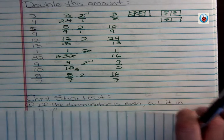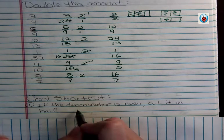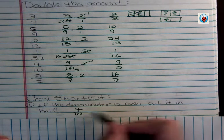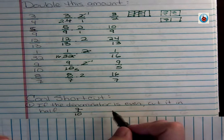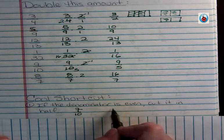So the cool shortcuts are: if the denominator is even, cut it in half. If I have something like seven tenths, all I have to do—I mean, sorry, we're doubling it—so we're going to cut the ten in half and get seven fifths.